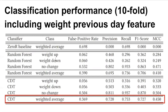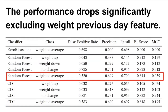Someone can argue that the next day's weight depends on the previous day's weight. Therefore, we performed the same experiment set excluding the feature weight previous day. When we exclude this feature, we can see a significant performance drop for all methods. On the other hand, we can see that the random forest algorithm now performs better than the classification decision tree. We performed these experiments to show some capabilities and directions of this dataset.